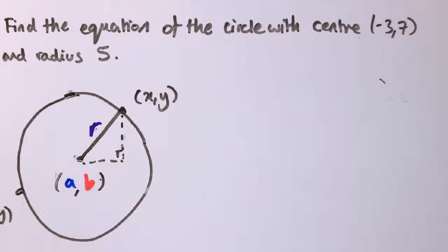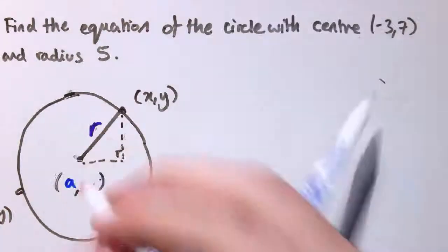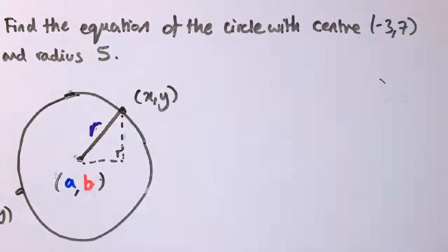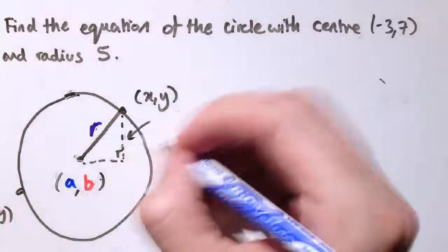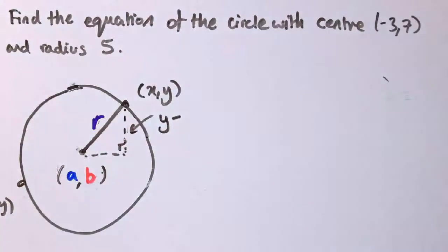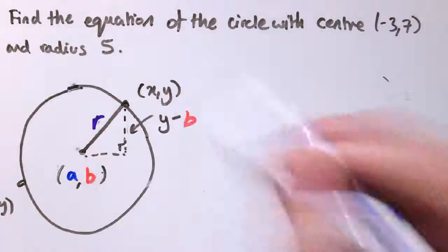And this same logic leads us to a general form. So let's say I've got a point with x coordinates a and y coordinates b and the circle's got radius r. Well, I would just apply the same logic.